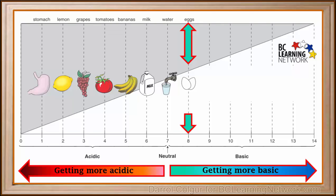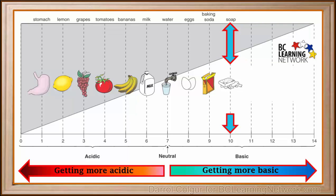Now we'll go to the basic side. Eggs are very slightly basic with a pH of about 8. Baking soda is a little more basic with a pH of about 9. Soap is more basic than this with a pH of around 10.